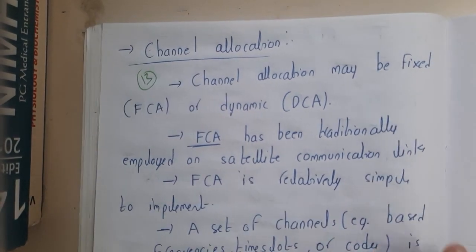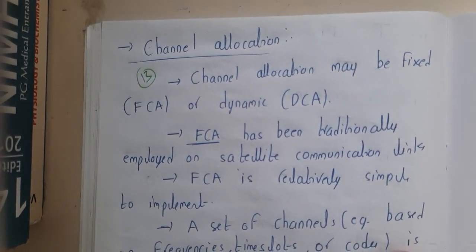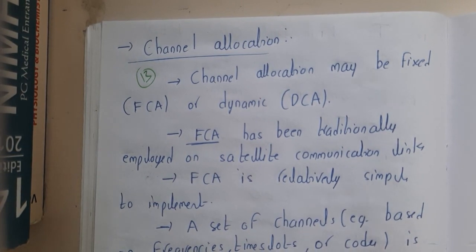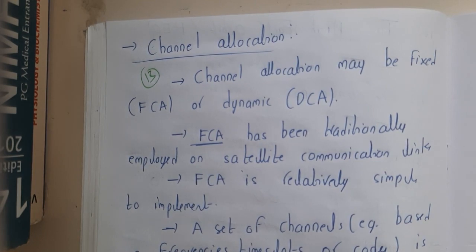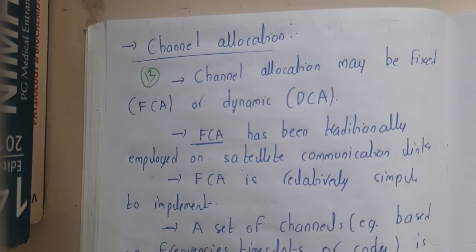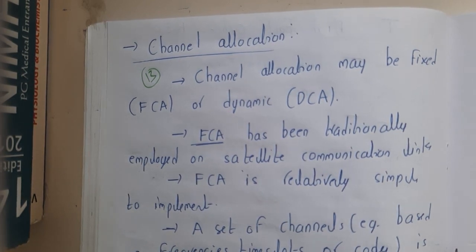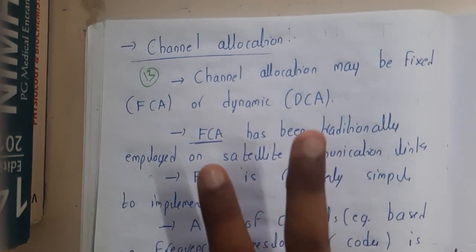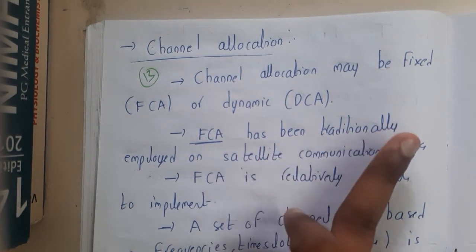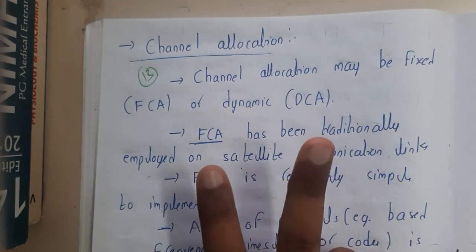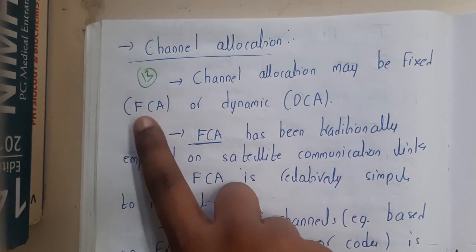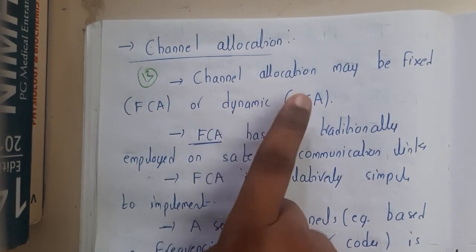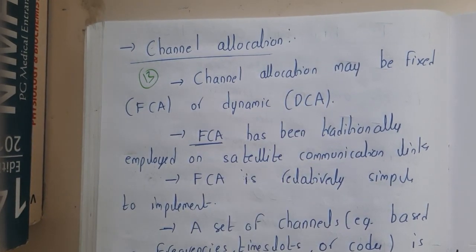In this lecture, let us go through channel allocation and its types. Just as we divide channels based on frequency or time division, channel allocation for satellites can be done in two ways: fixed allocation and dynamic allocation. Channel allocation may be FCA, that is Fixed Channel Allocation, or Dynamic Channel Allocation.